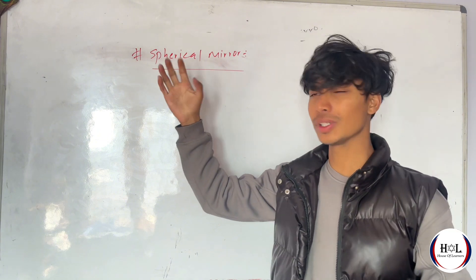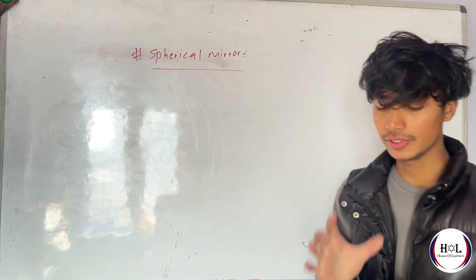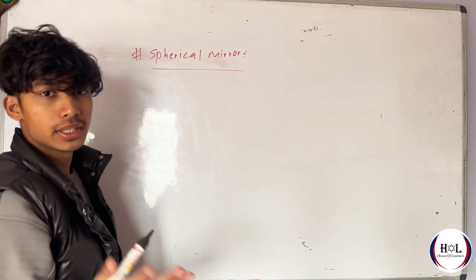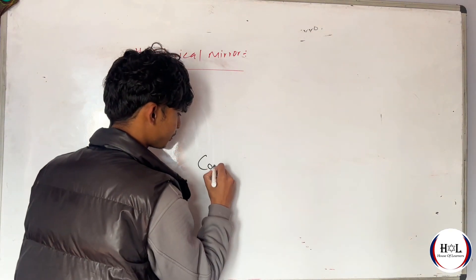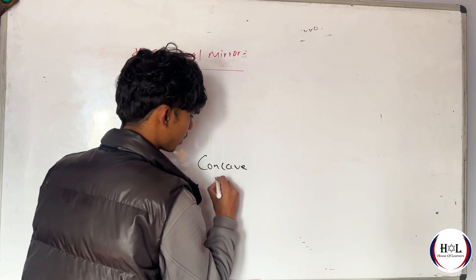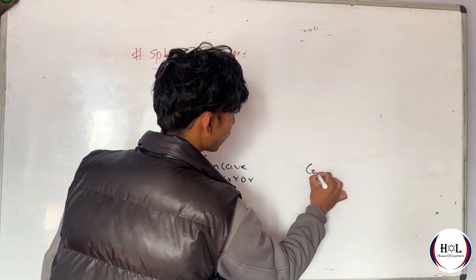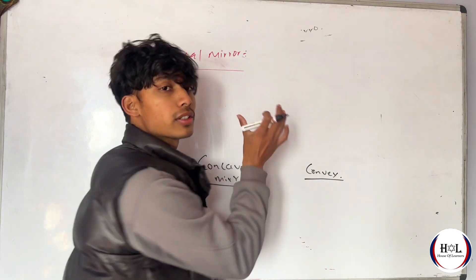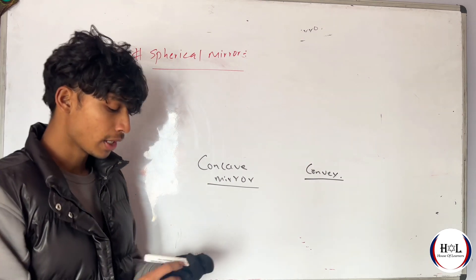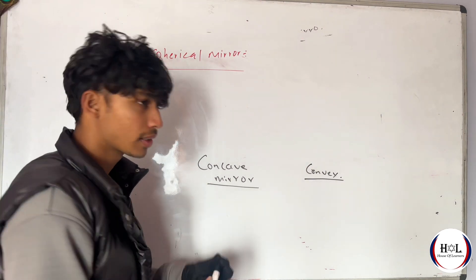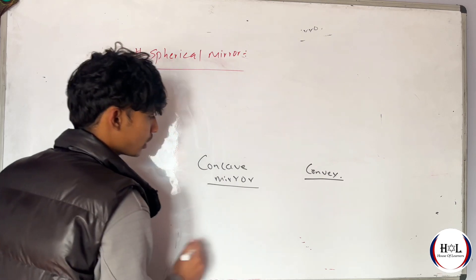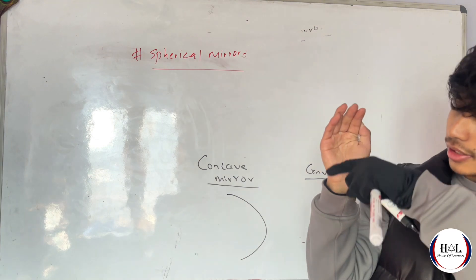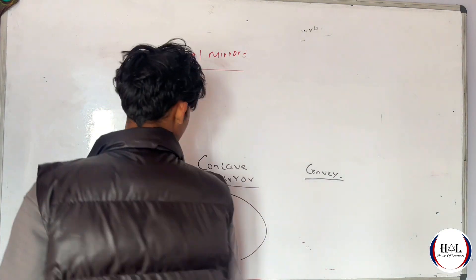Before going to its definition, I'll pick it up. So here is a spherical mirror — concave and convex. It acts as a reflection in the surface.